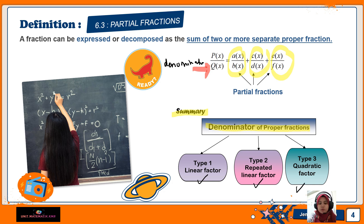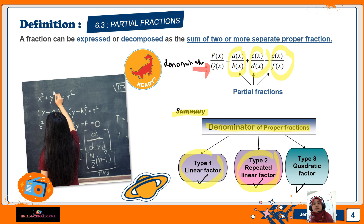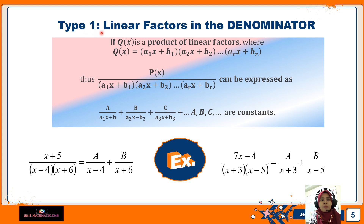For example, you have Type 1: linear factor, Type 2: repeated linear factor, and Type 3: quadratic factor. For today we will focus on Type 1 and Type 2. Let's continue with Type 1 — we focus on linear factors in the denominator. Let's say Q(x) is a product of linear factors: Q(x) = (a₁x + b₁)(a₂x + b₂) … (aᵣx + bᵣ).